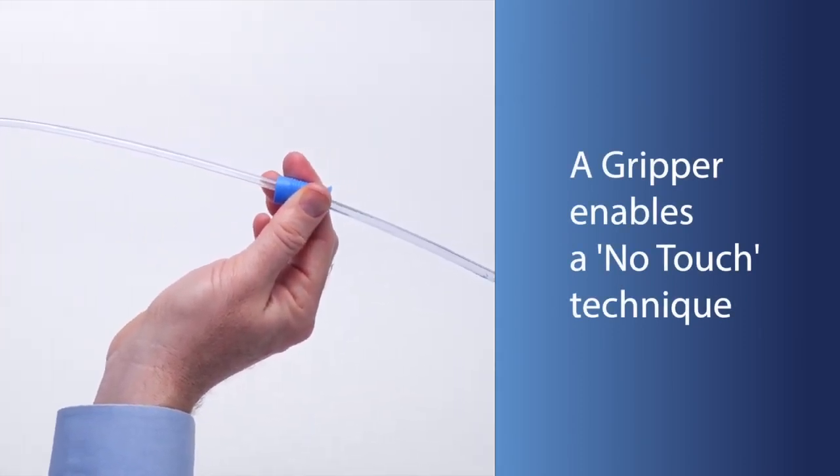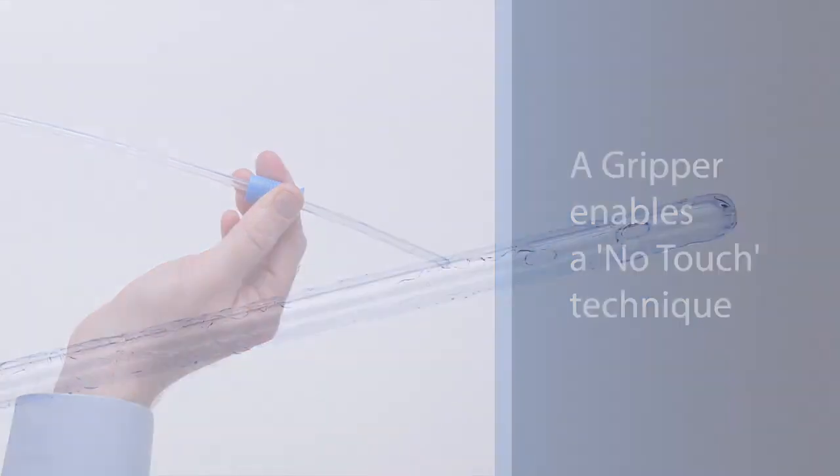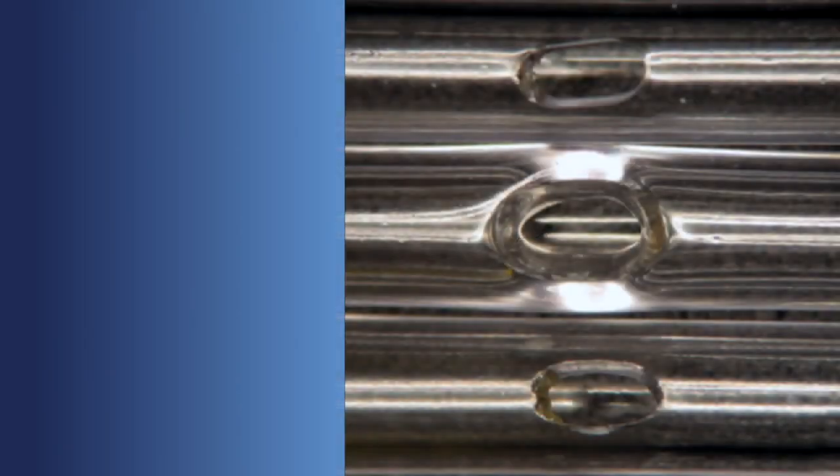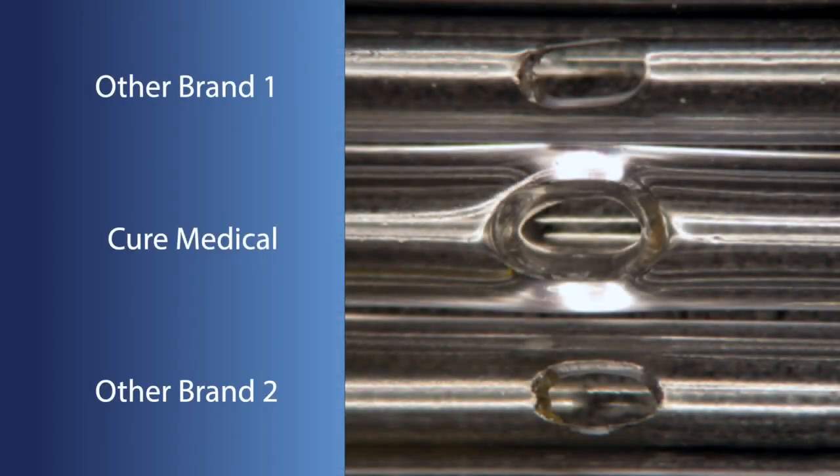The pre-lubricated Cure Ultra catheter tip features smooth, polished eyelets for comfort. This magnified image shows an eyelet on a Cure Medical catheter compared to eyelets on two other national brands. The difference in eyelet quality is clearly seen and can be felt.